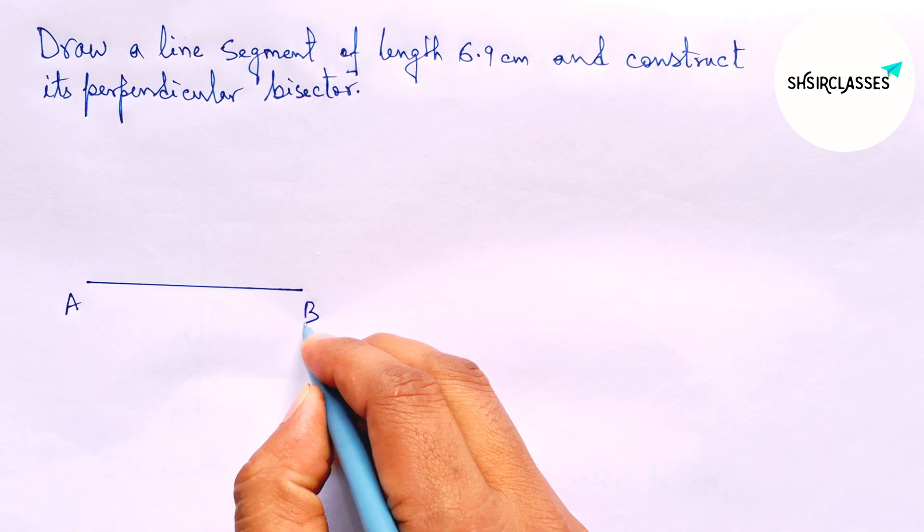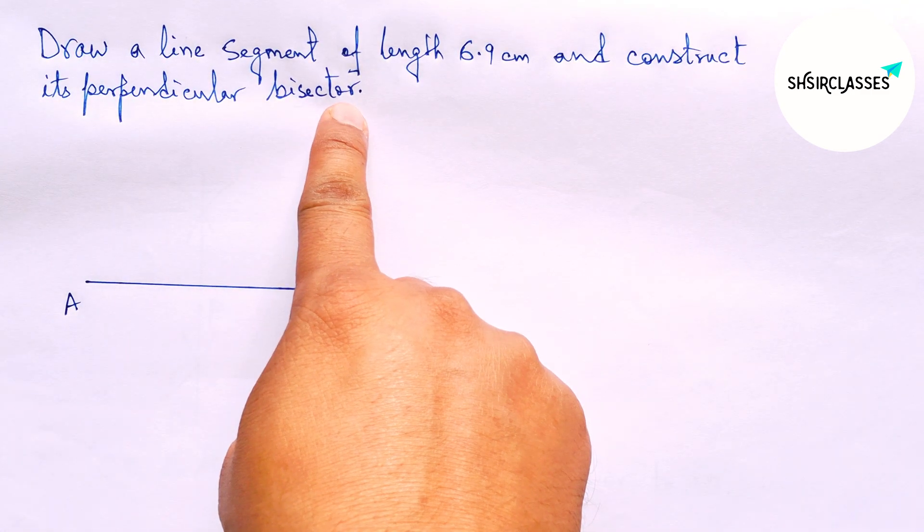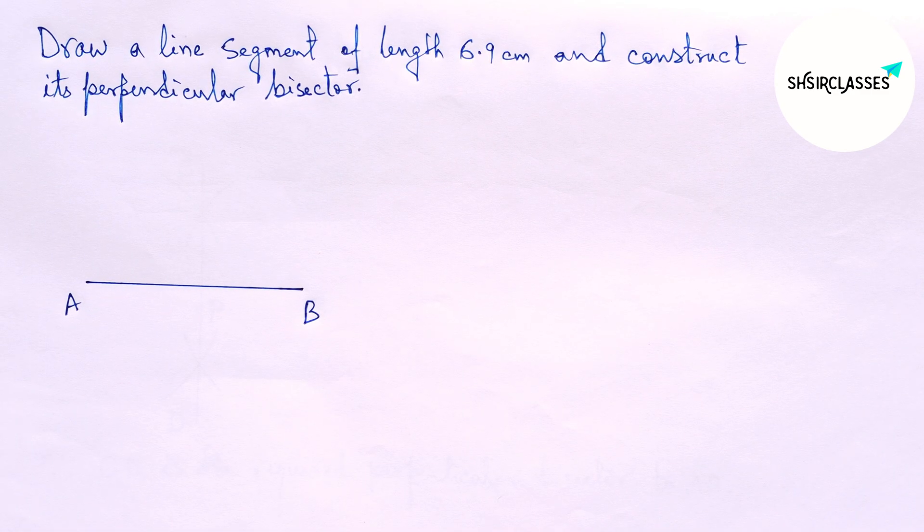Now labeling here A and B. Next, construct its perpendicular bisector to the line AB with the help of compass.